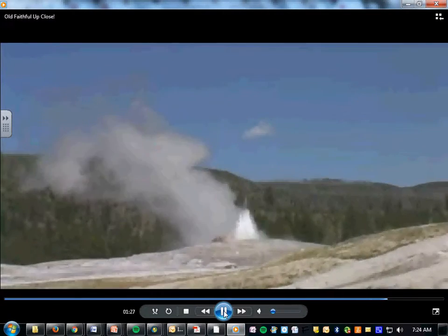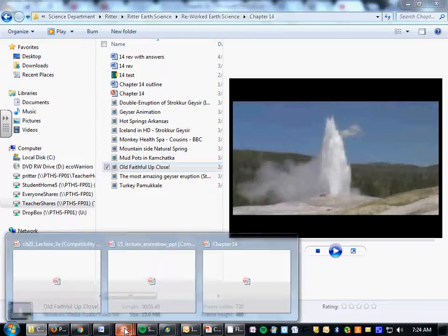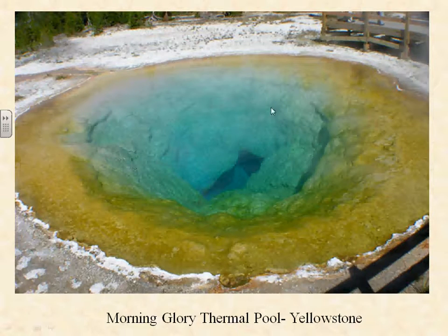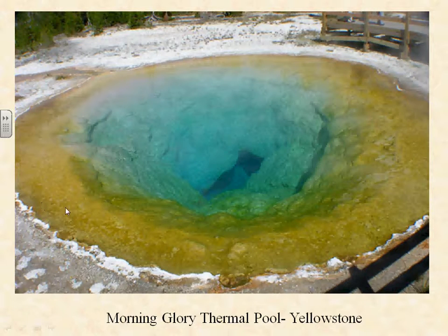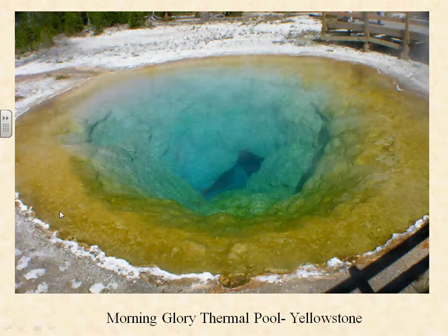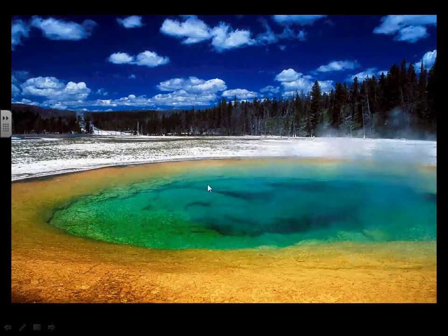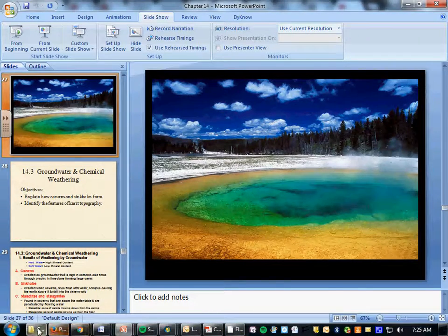This is called Morning Glory out in Yellowstone, and it's actually two different kinds of bacteria. The blue ones are thermophiles that can tolerate hotter temperatures at the center. The yellow ones are less tolerant and can't take as much heat, so they're on the outside. Yellow and blue make green, so where they mix you see green where some can survive. Pretty cool.